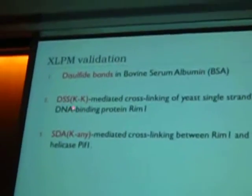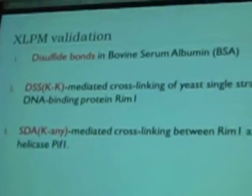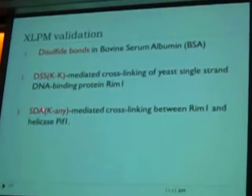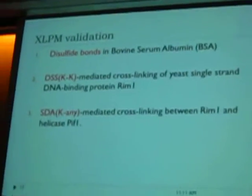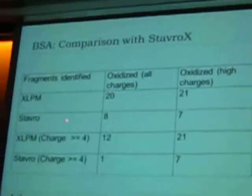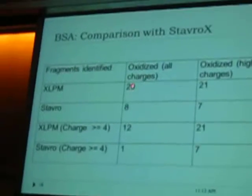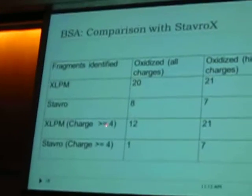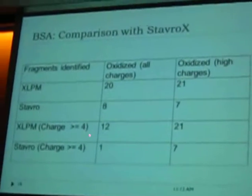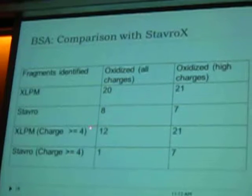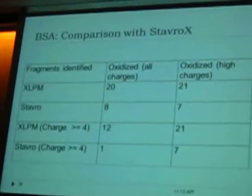One of our collaborators solved a crystal structure of RIM1, so we analyzed the actual crystal structure to see whether we are predicting the right contact points using XLPM. We also showed its efficiency in resolving when the specificity of the cross-linker is not known. Comparing to StavOx, we can clearly see that XLPM did a better job in predicting more cross-links. More importantly, we expect cross-links to be charged greater than or equal to 4, and XLPM predicted a higher fraction of higher charge spectra compared to StavOx — StavOx predicted just 1 out of 8 and XLPM predicted 12 out of 20.